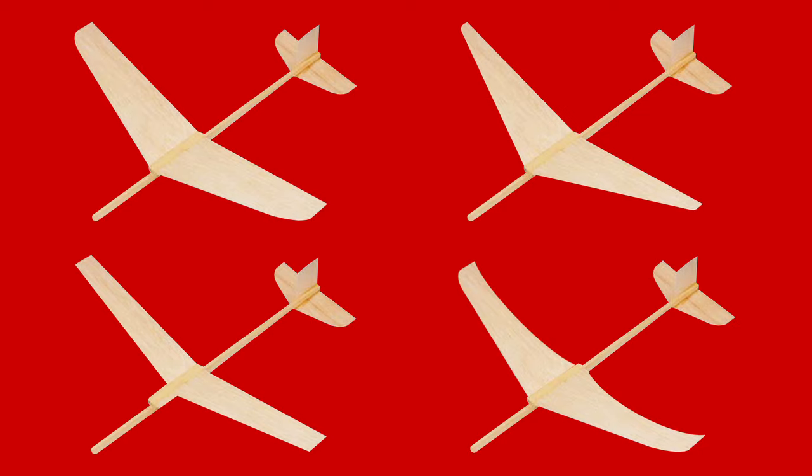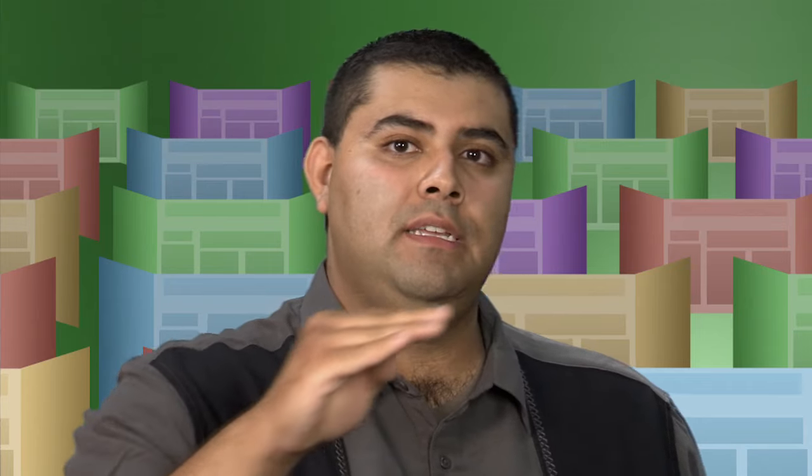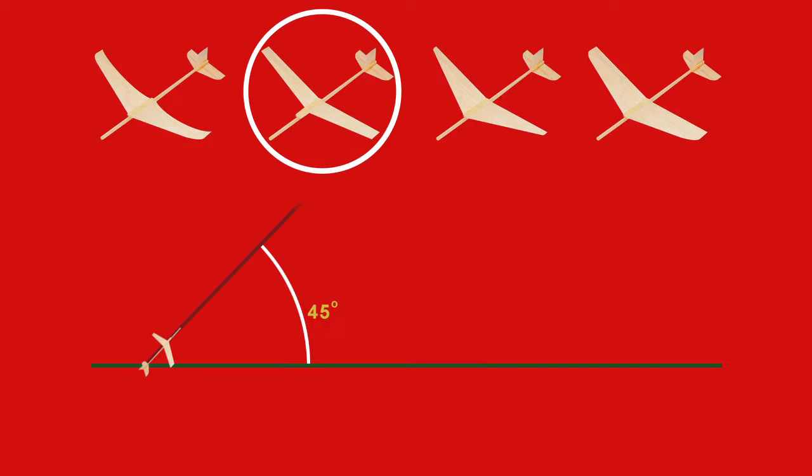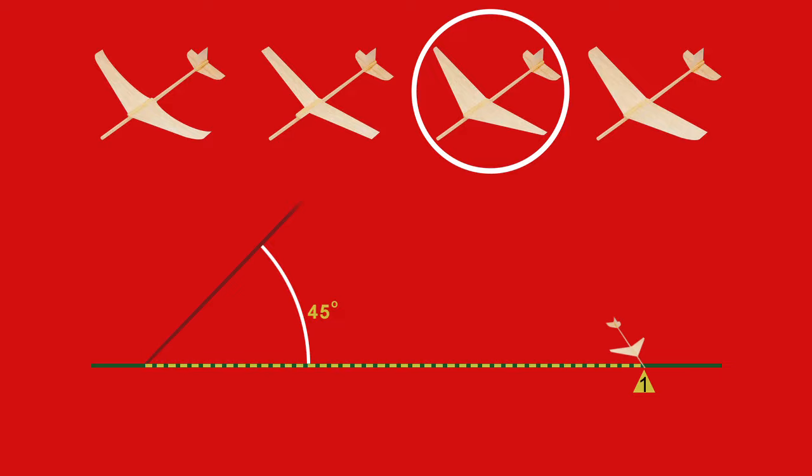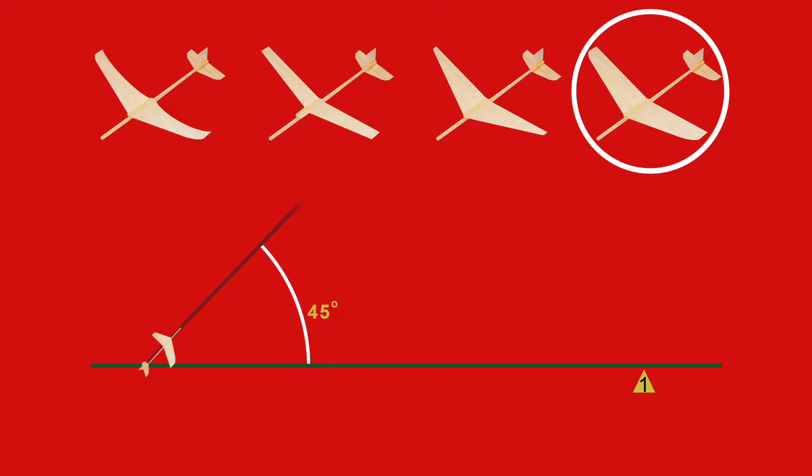So you would do the same procedure for one wing design. You would launch it several times, take your distance measurement, then you would change your wing design, return to that same angle, and do several launches. And you do this for as many wing designs as you have. Then you'd compare your distances and find out which one's the best wing design for distance.